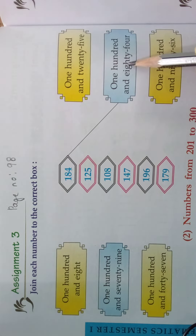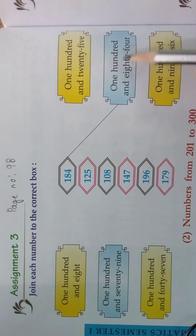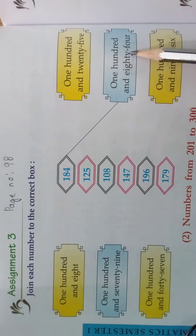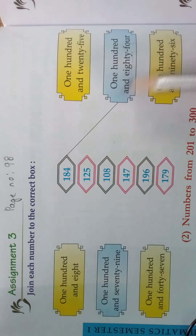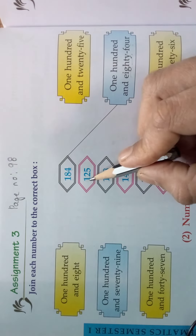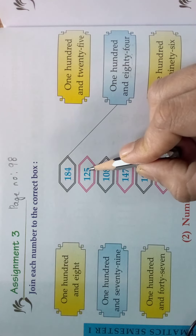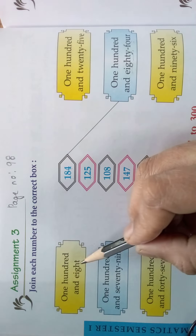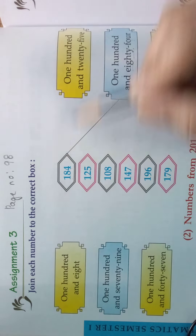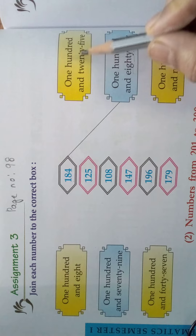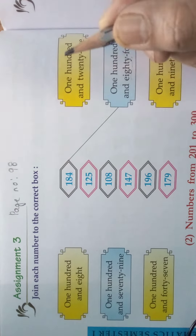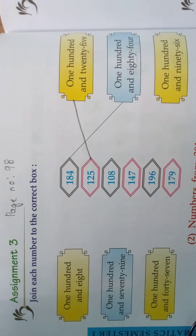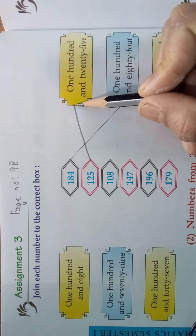One hundred and eighty-four is here. You know the spelling of eighty-four, so you learn one hundred — that is easy. One hundred and eighty-four. Now come, we will join the next number: one hundred and twenty-five. Where is twenty-five? One hundred and twenty-five. One hundred and eighty-four — no, one hundred and twenty-five is here. Come, we will match it children. In this way, you join it.